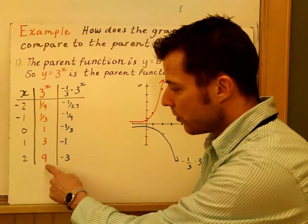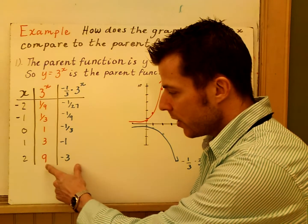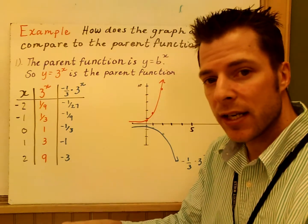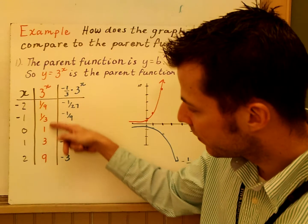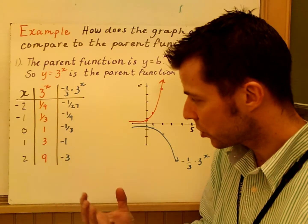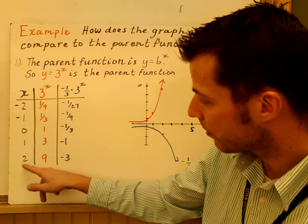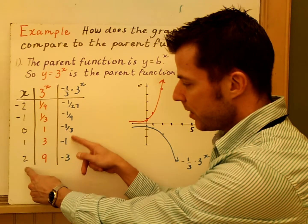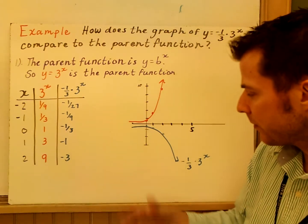We think about it, 9 and negative 3. The graph is taking negative 1 third of these Y values. That's what's going on. Negative 1 third of all those Y values. So it's a shrink. You know it's a shrink because at the same value, these are less. And they're reflected.